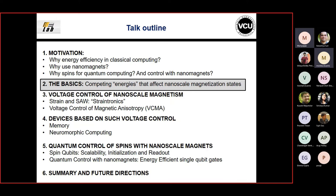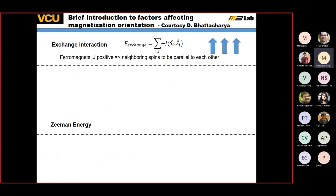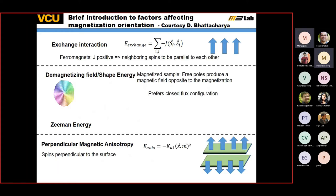With this background on the motivation - voltage control of magnetism for both classical and quantum computing - I'll start with some very basic energies, more like a tutorial. Forgive me if you're already familiar with this. These are the energy terms important for interpreting experimental results. The one thing that wants all the spins to stay together is exchange coupling or Heisenberg coupling. If orienting the spins parallel gives a ferromagnetic state, and if J is negative, you get an antiferromagnetic state. Then you have the demagnetizing field or shape anisotropy.